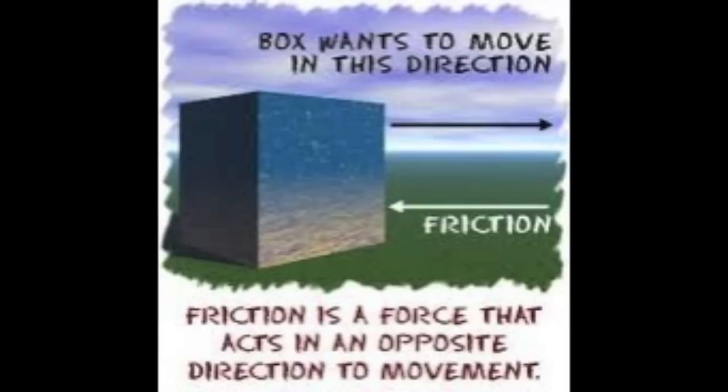For example, in this picture we can see that the box wants to move in the right direction, and because friction is the force that opposes that, you can see that friction is moving to the left. Friction is an unbalanced force that would be acting on the box in this case to slow it down.